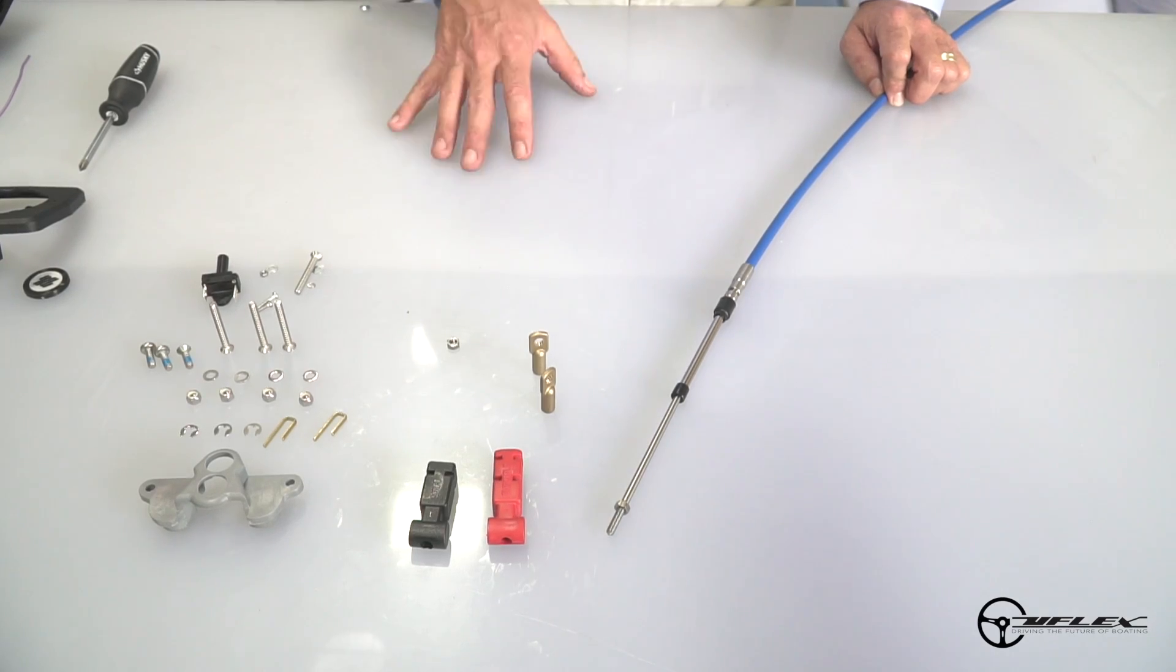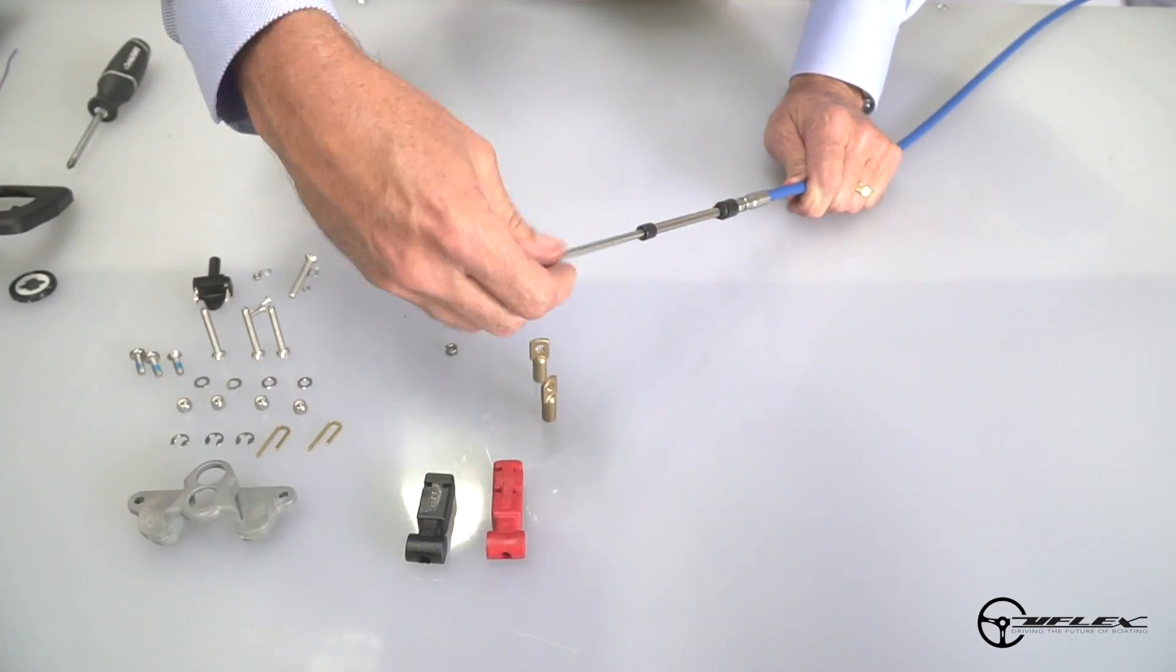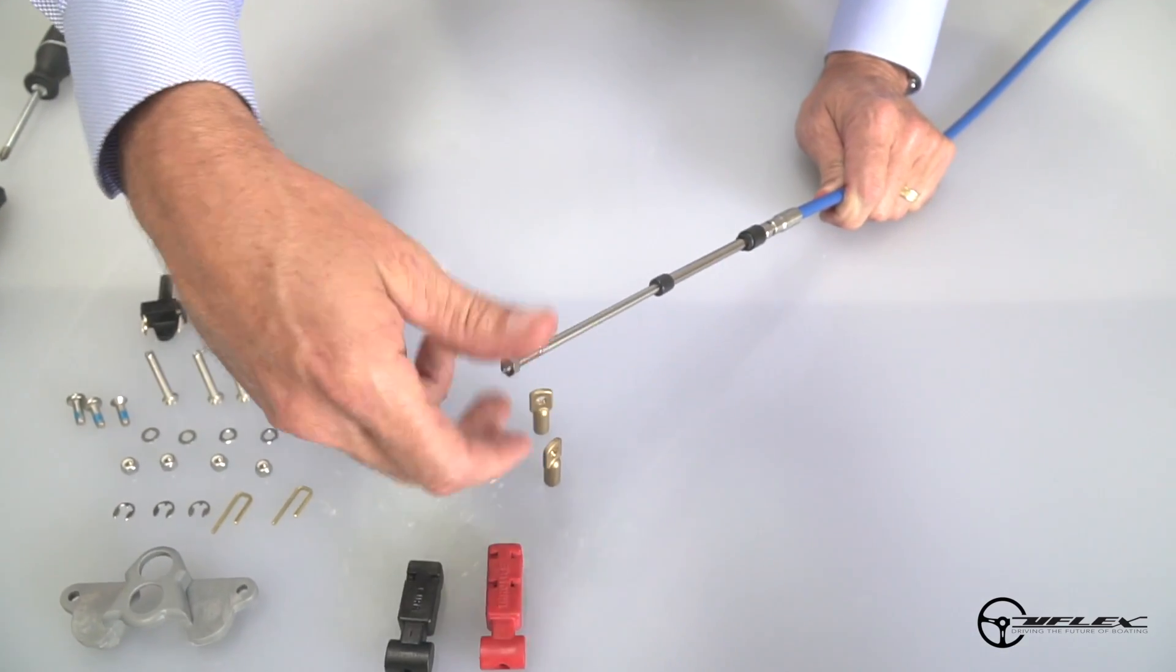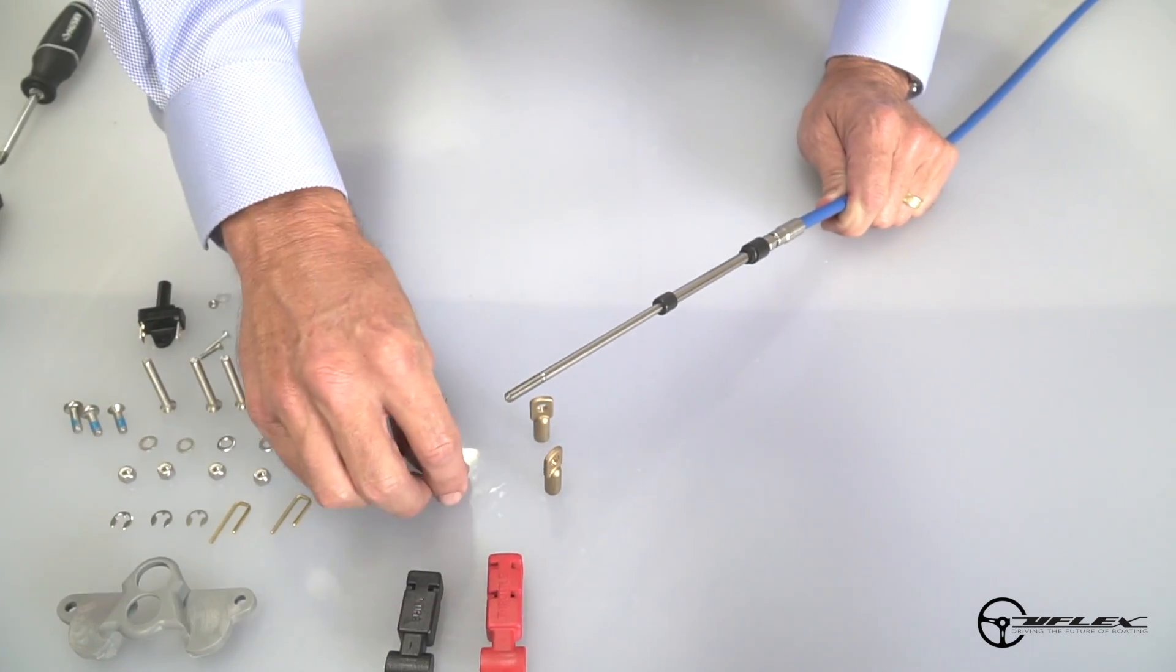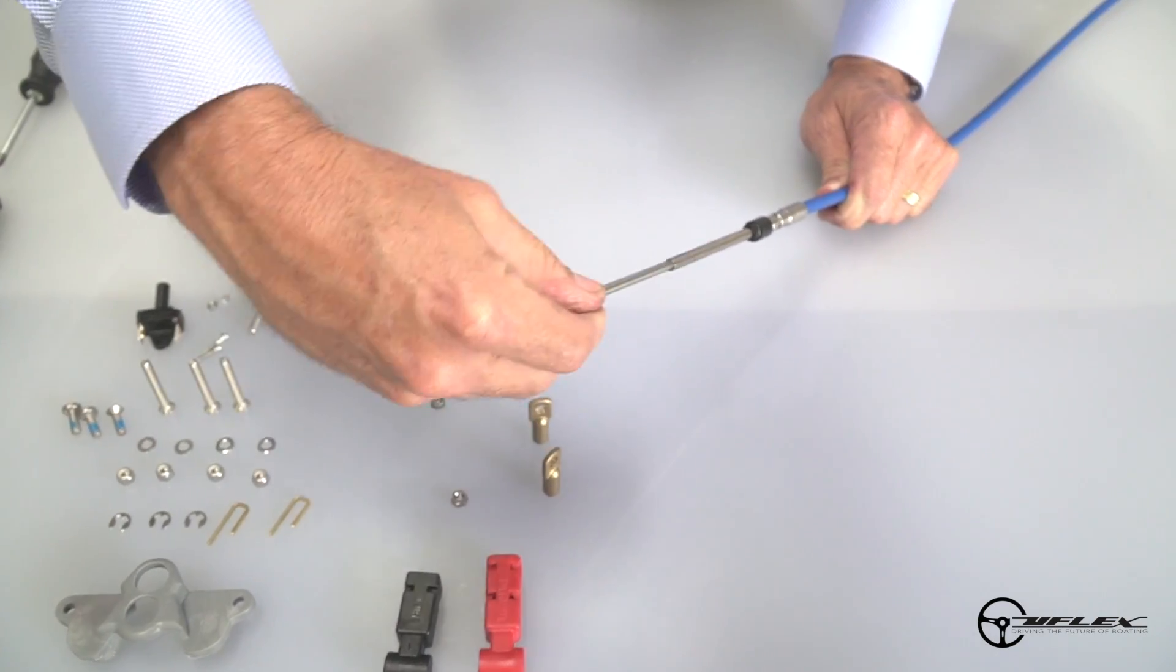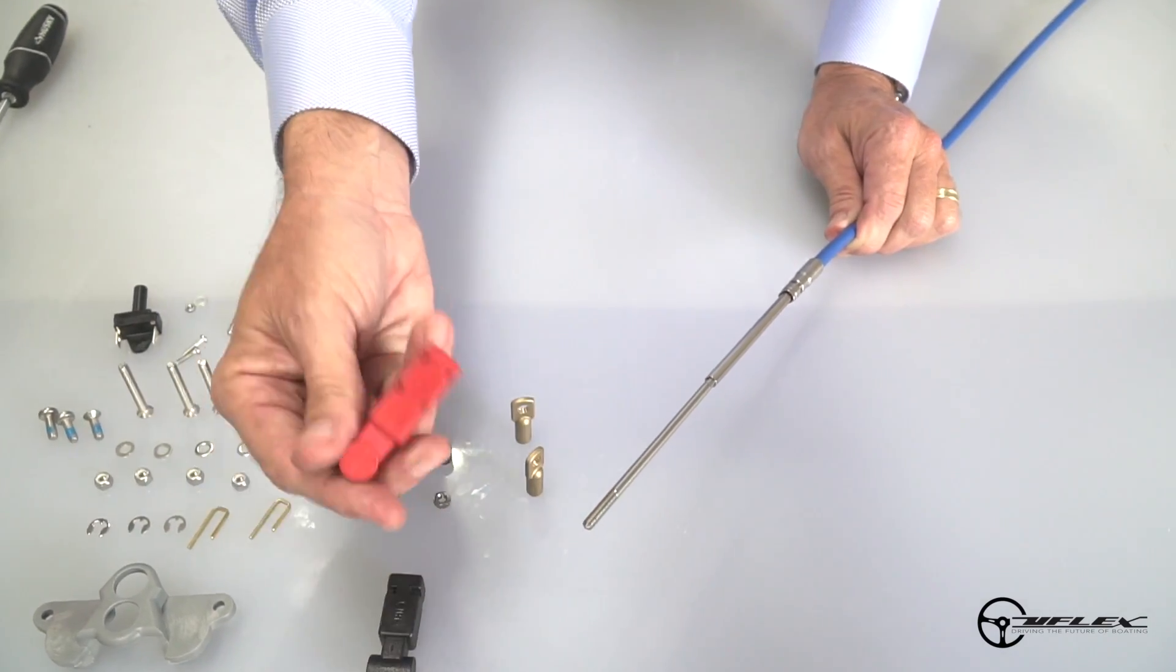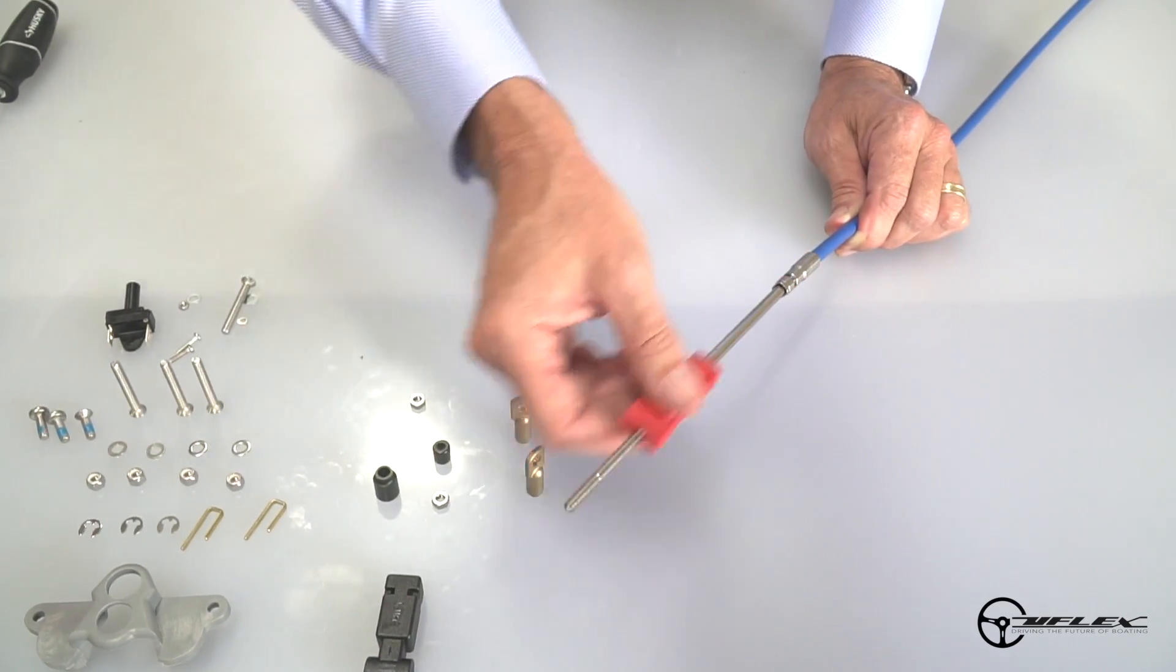Now that I've determined the proper cables for my boat, I've got to prepare the cable for installation. That's pretty simple. All I have to do is take the jam nut off the end of the cable, pull the grommets off, and then slide this part here for throttle or shift.